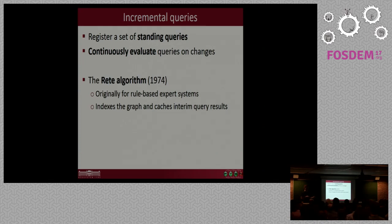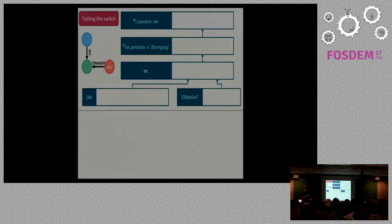There is a quite simple algorithm which is called the RETE algorithm. It actually comes from 1974 and was originally designed for rule-based expert systems. The main idea of the RETE algorithm is that it indexes the graph and caches the interim results in a network. RETE actually means net in Latin. So this defines a propagation network for the query and it stores the results so that it can only maintain the results upon changes. So, how does this look like in practice? For the second constraint, trailing the switch, we have the graph pattern and this is our RETE network.